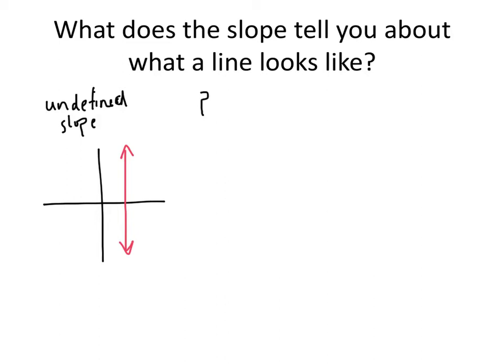If our slope is positive, then that means that as we go from left to right, our line goes up. So a line with positive slope is going to look something like this. As we go from left to right, our y values are increasing.